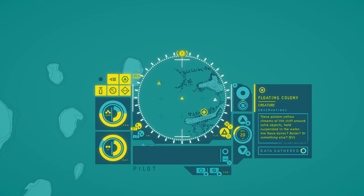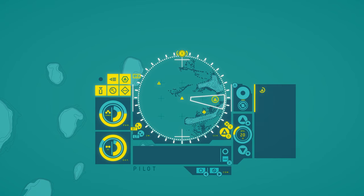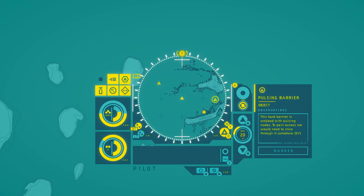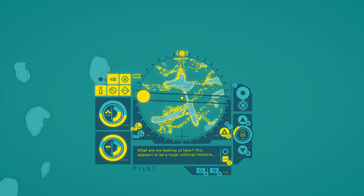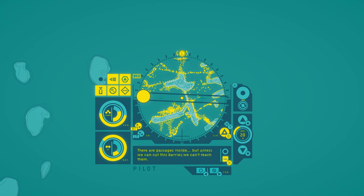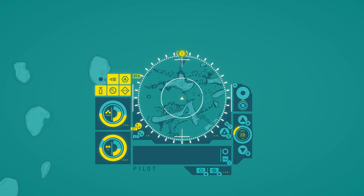Floating colony. Oh, that's a new creature. This creature is impossibly large. I don't even know how to start logging data on it, but I'll try. These golden yellow streams of life shift around solid objects held suspended in the water. Are these bones? Rocks? Or something else? Pulsing barrier. This hard barrier is webbed with pulsing nodes. To gain access, we would need to slice through it somehow. What are we looking at here? This appears to be a huge colonial life form. There are passages inside. But unless we can cut this barrier, we can't reach them. Okay, so we need to come back here when we have a new tool or something like that.